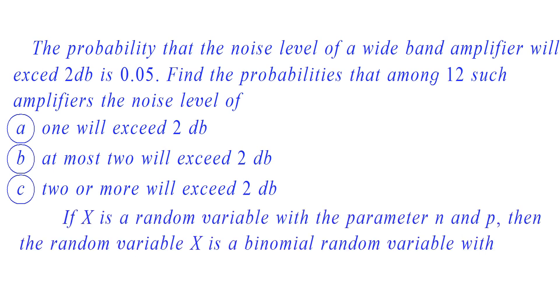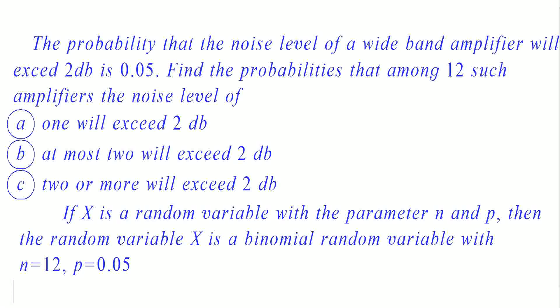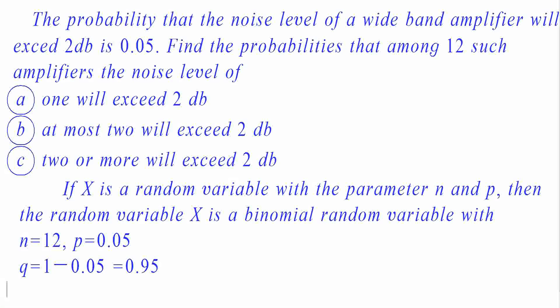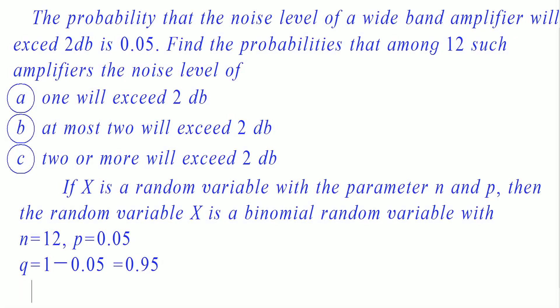Here in this question, we are given that there are 12 amplifiers. Therefore N is equal to 12. Also given that the probability of noise level exceeding 2 decibels is 0.05. Therefore P is equal to 0.05. Since P is the probability of noise level exceeding 2 decibels, Q will be the probability of noise level up to 2 decibels. Total probability P plus Q is equal to 1. Therefore Q is equal to 1 minus 0.05, which is equal to 0.95.